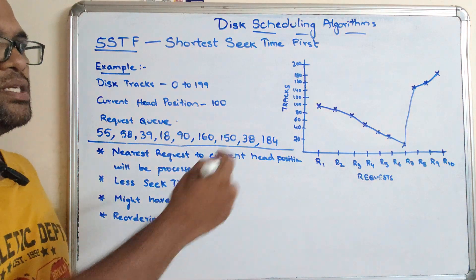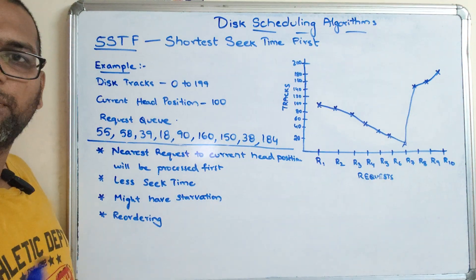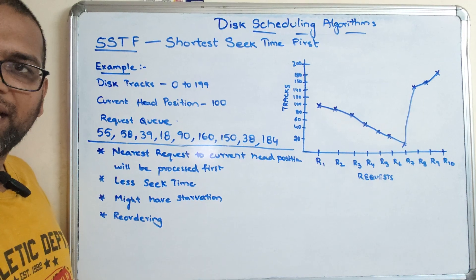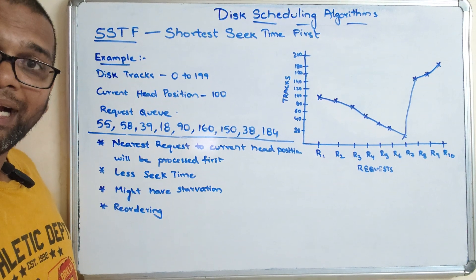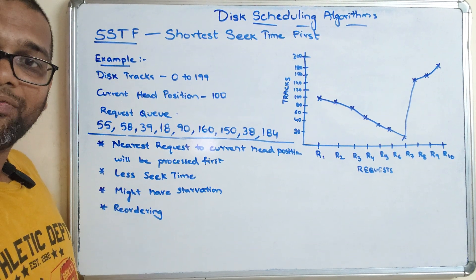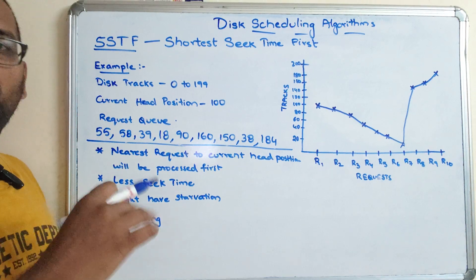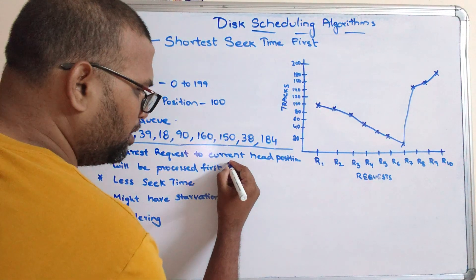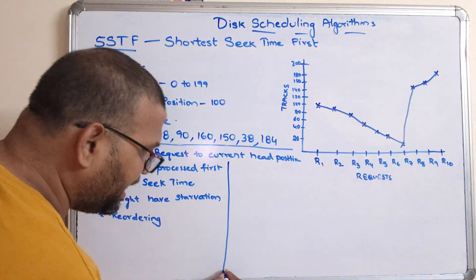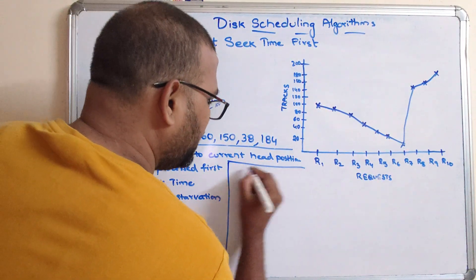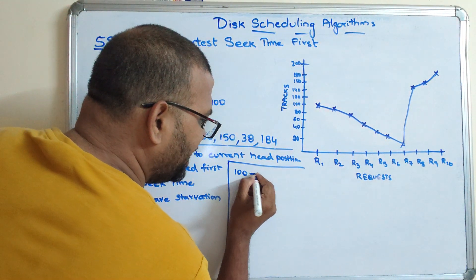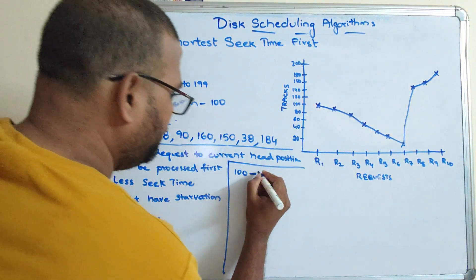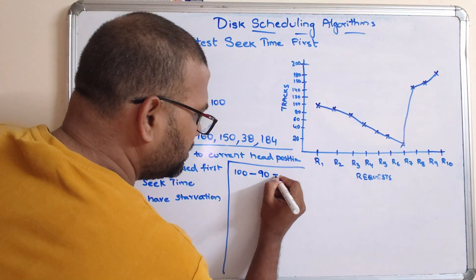This is the graph showing how the requests are processed. The key principle is: from the current head position, the next request processed is always the one closest to it. We can now observe the seek time. The first position is 100; the next closest is 90, so the difference is 10.